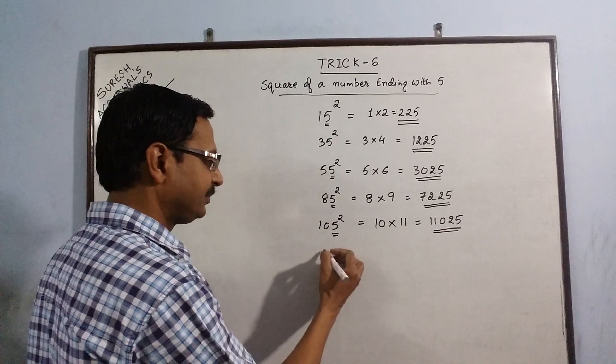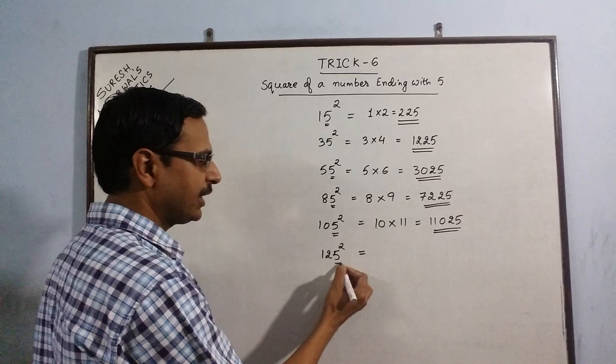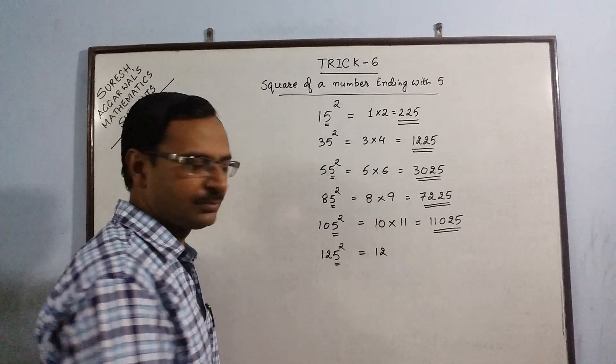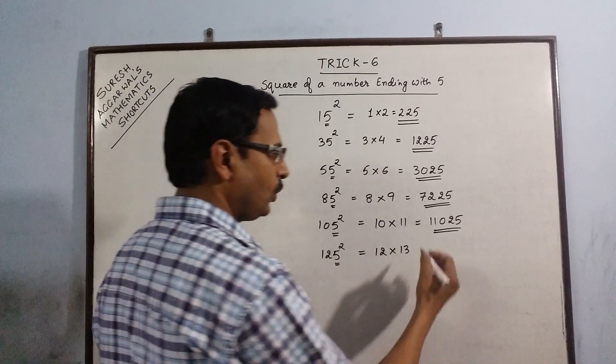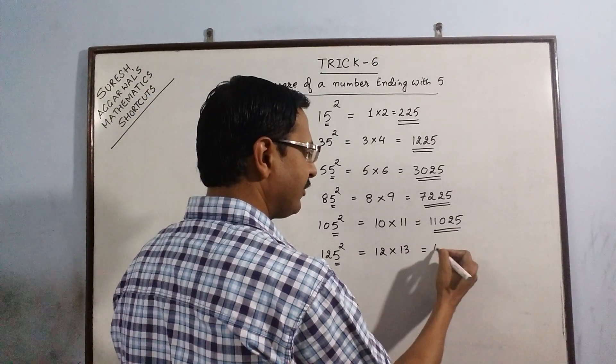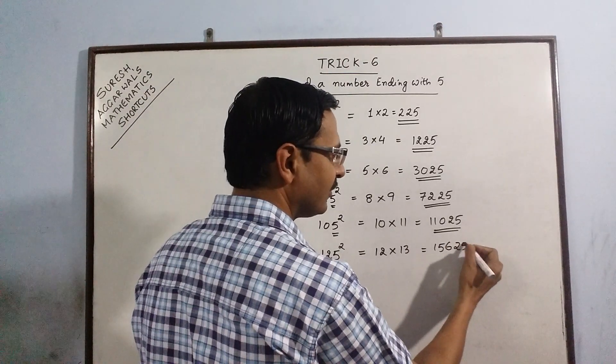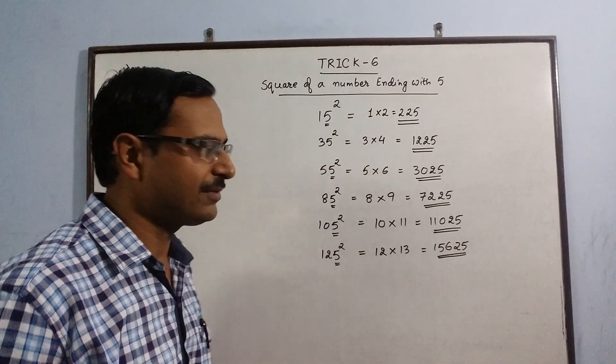Further, say we have one more quantity 125. Forget the 5, retain 12. Multiply by the next number 13. We get 156. Just put 25. So the square of 125 is 15625.